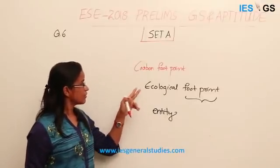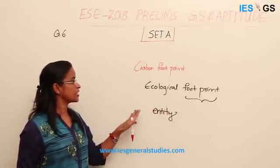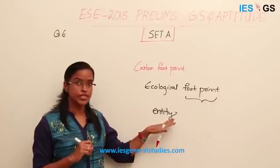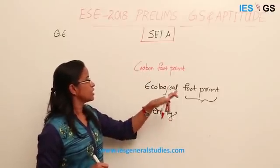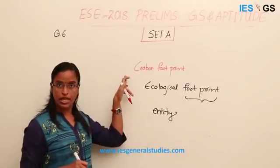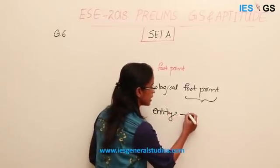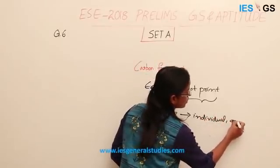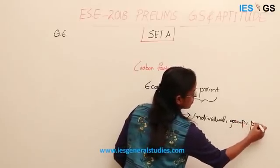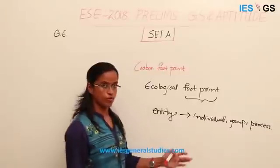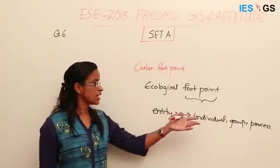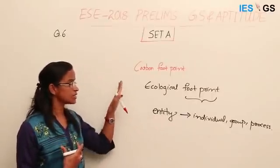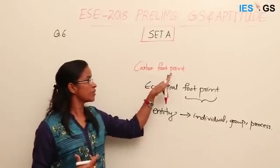If it is Ecological Footprint, it denotes the impact of the entity on the environment and environment resources. If it is Carbon Footprint, it denotes the impact of the entity on carbon emissions. The entity can be an individual, or a group, or any process, or any industrial process. How much this entity has an impact on carbon dioxide emissions determines its carbon footprint.